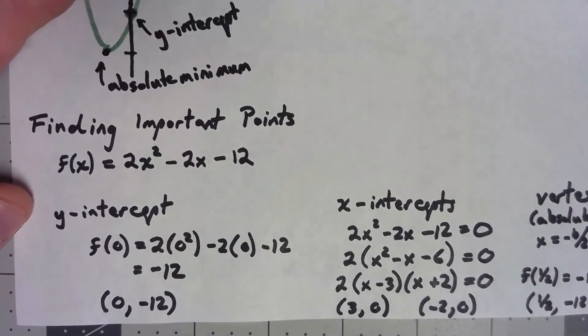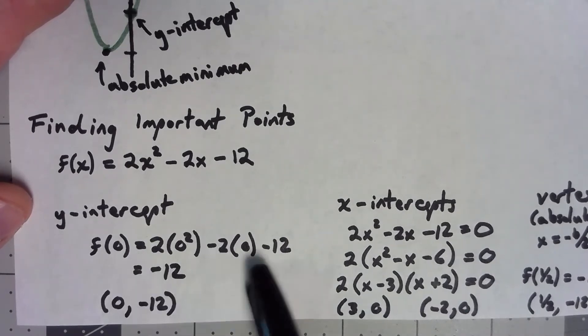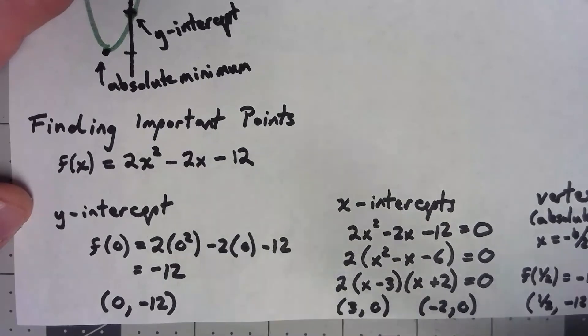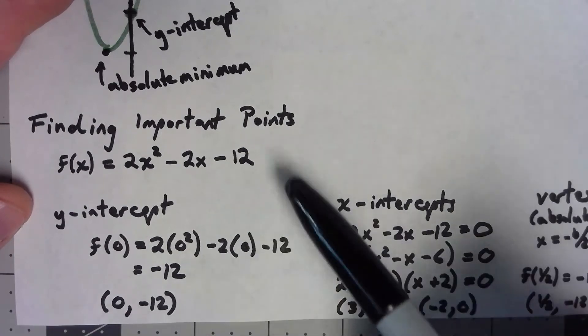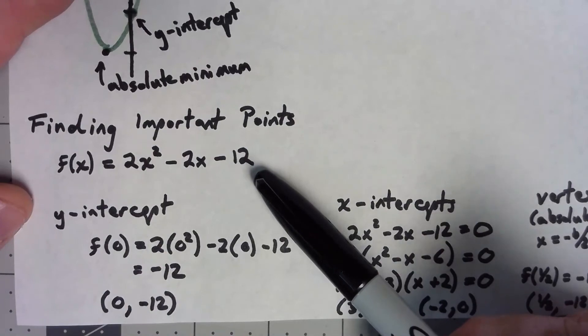To find the y-intercept, all we have to do is plug in zero, and this applies for any polynomial. If I plug in zero for x, plug it in for x, plug it in for x. Of course, anything times zero is zero, so the whole thing is just negative 12. And so, zero, negative 12 would be the y-intercept for this function.